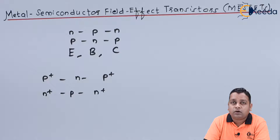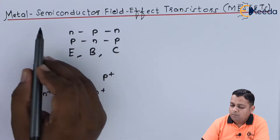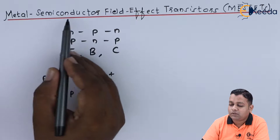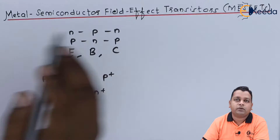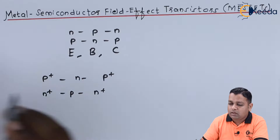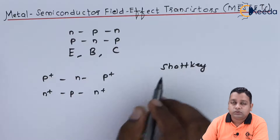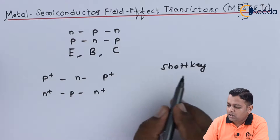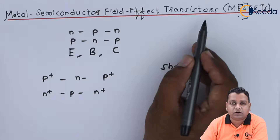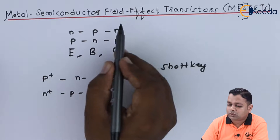Having learned the depletion type JFET and its current-to-voltage characteristics, we now move to the field effect transistor made with a metal-to-semiconductor connection — called the MESFET. MESFETs were originally developed by Schottky, who invented the Schottky barrier potential, and when this was applied to field effect transistors, this new family member of FETs was invented.